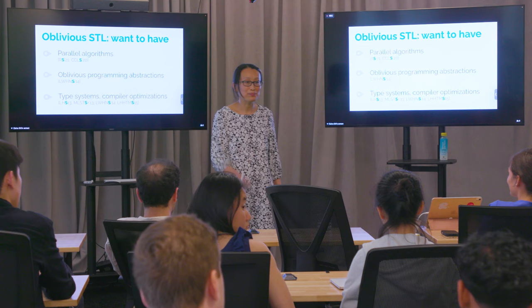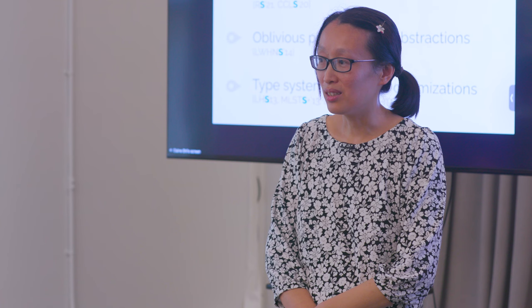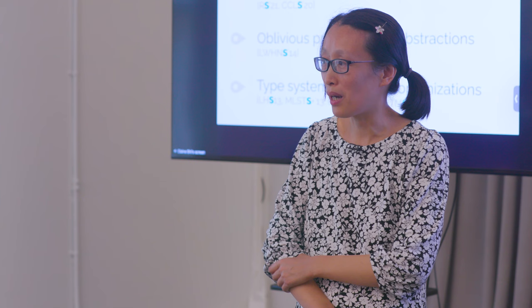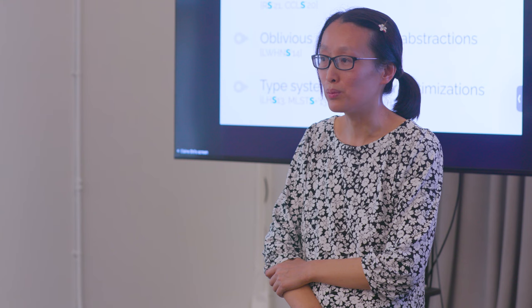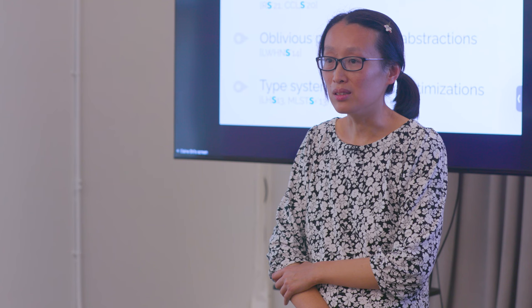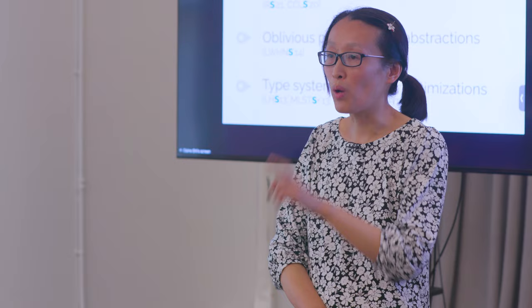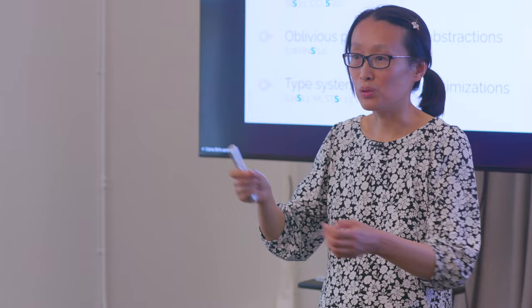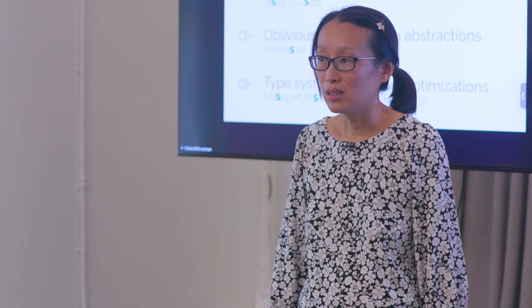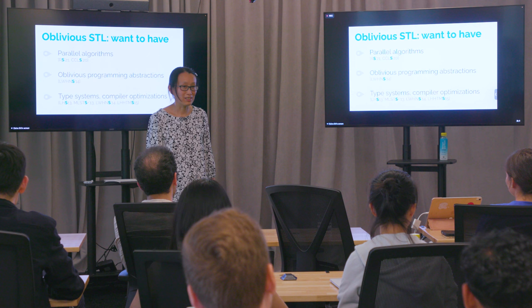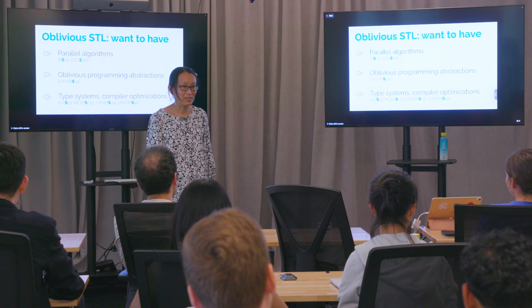Question: Randomization is needed in these algorithms — is getting good randomness a solved problem? Answer: That's a somewhat orthogonal question. Yevgeni Dodis has looked at randomness generator implementations in Linux and proposed more secure variants. Really all you need is to generate randomness once and then use a PRG to stretch it — for example use AES to stretch some short random seed to non-random-looking output. You don't have to sample true randomness for the whole algorithm. If you are interested in Oblivious STL, talk to me — I'm always happy to discuss it.